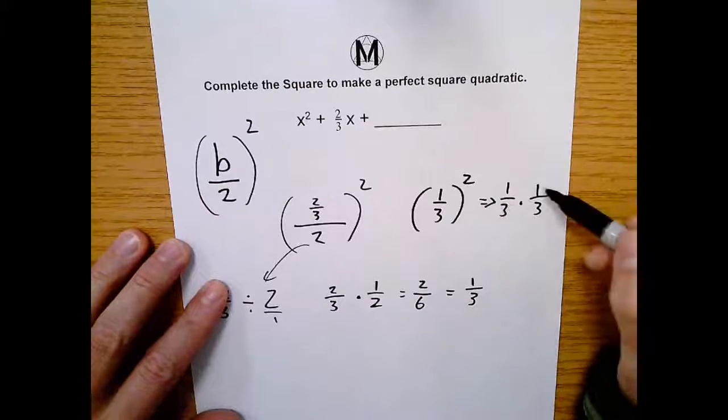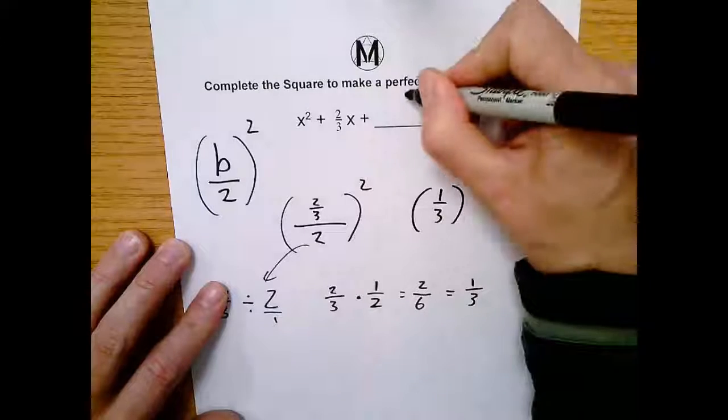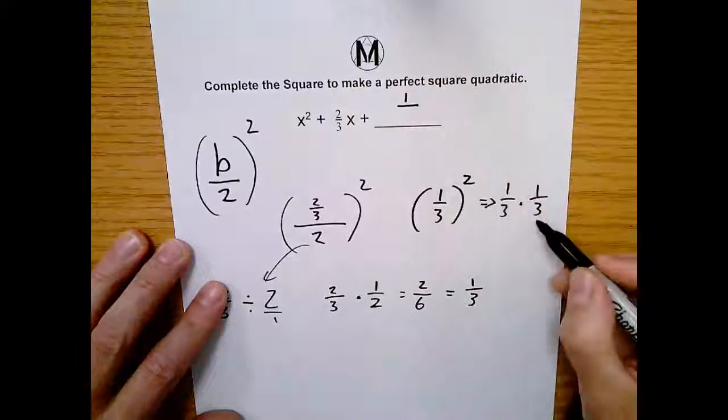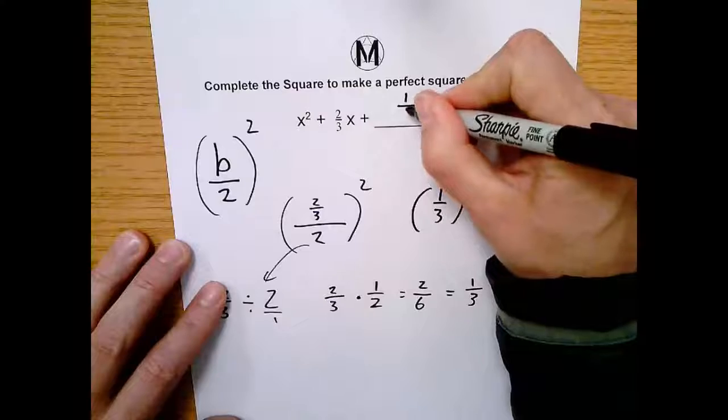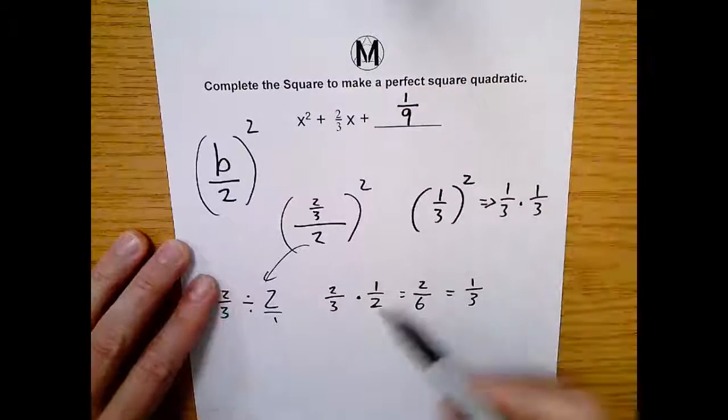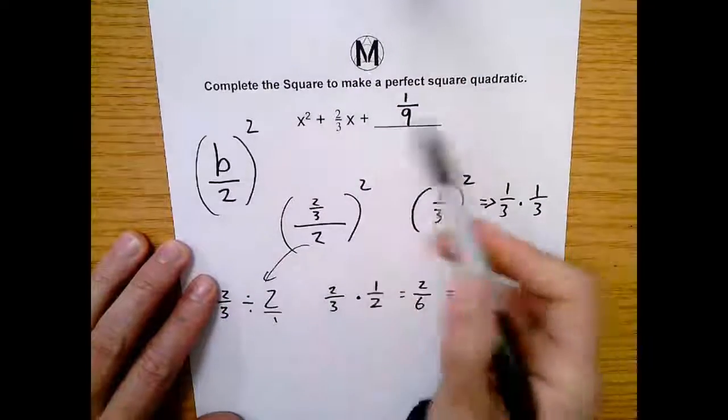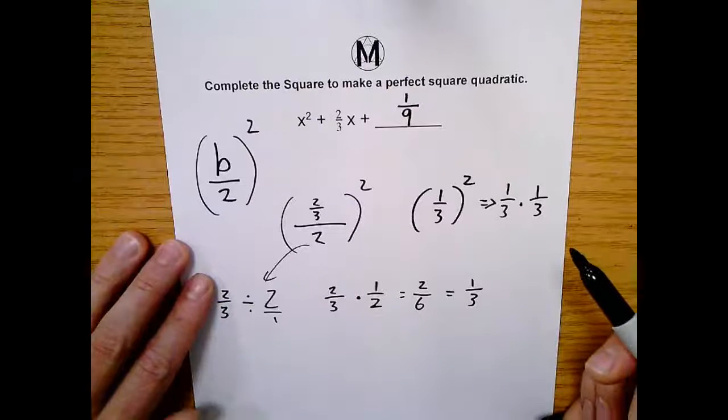And again, numerator times numerator, that's 1. And denominator times denominator, that's 9. And just like that, you have filled in b over 2 squared to make your perfect square quadratic.